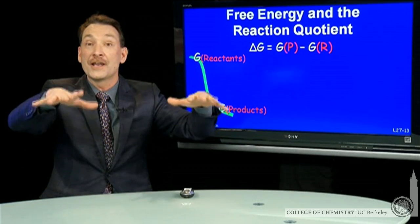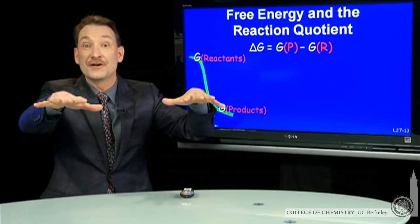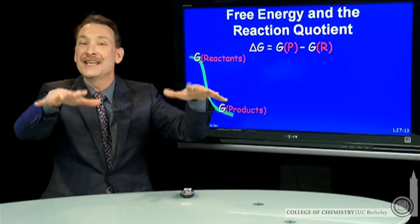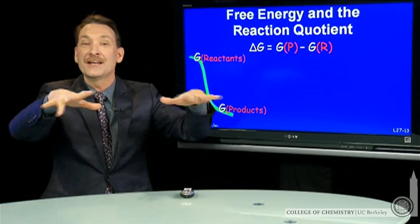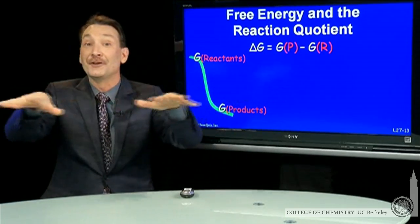Until you get to a point where the free energies are the same, so the difference between the free energy of the products and the reactants is zero. And that's the equilibrium state where I can switch between product and reactant with no free energy penalty. The playing field has been leveled.